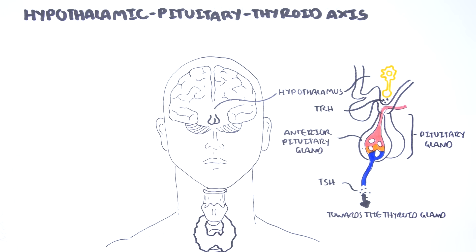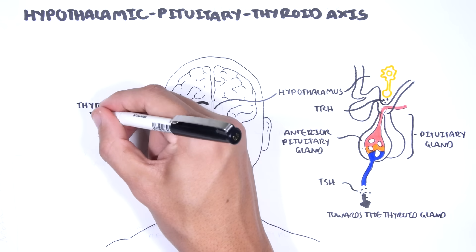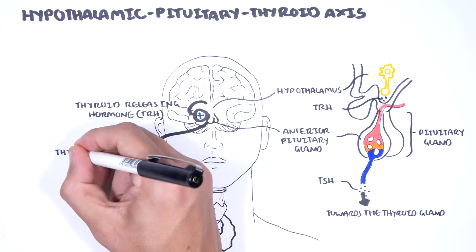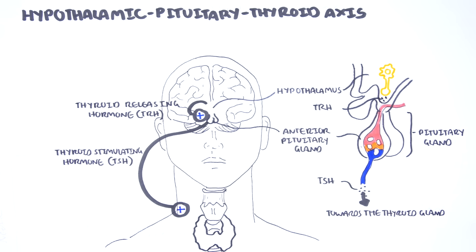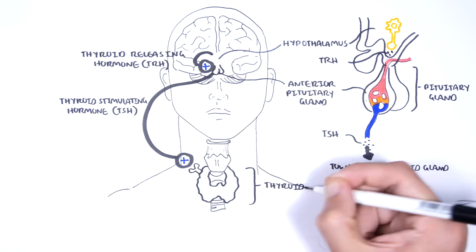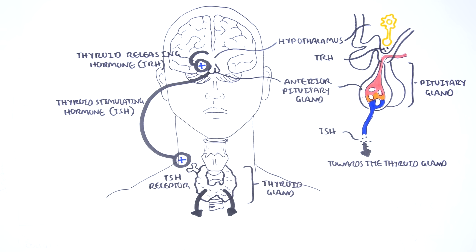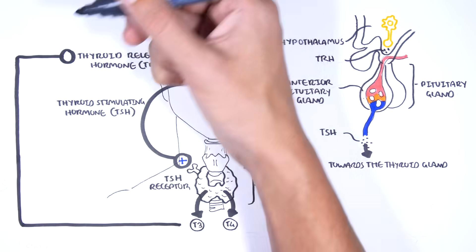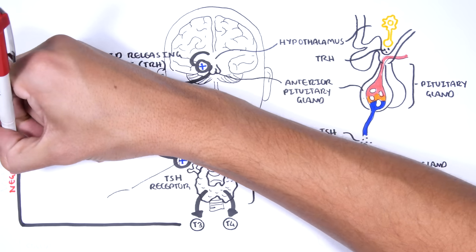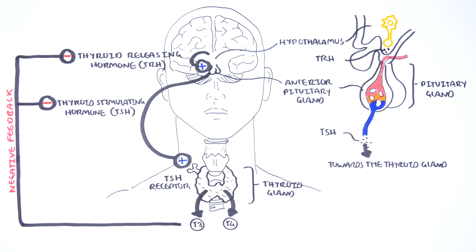Understanding the physiology of the thyroid gland — the hypothalamic-pituitary-thyroid axis — is important to understanding hyperthyroidism. Thyrotropin-releasing hormone, TRH, stimulates the synthesis and secretion of thyroid-stimulating hormone, TSH, which acts at the thyroid to stimulate all steps of thyroid hormone biosynthesis and secretion by binding onto TSH receptors. The thyroid hormones are triiodothyronine, T3, and thyroxine, T4. These thyroid hormones control the secretion of TRH and TSH by negative feedback to maintain the physiological levels of the main hormones of the hypothalamic-pituitary-thyroid axis.